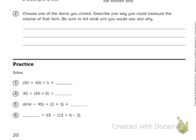Next, two says: choose one of the items you circled. Describe one way you can measure the volume of that item. Be sure to tell what unit you would use and why. So if I chose the empty crayon box, I might measure...